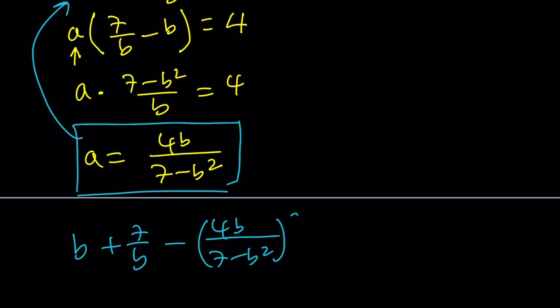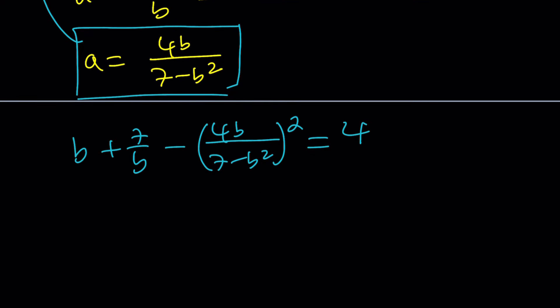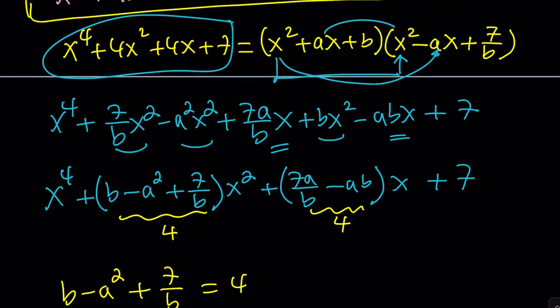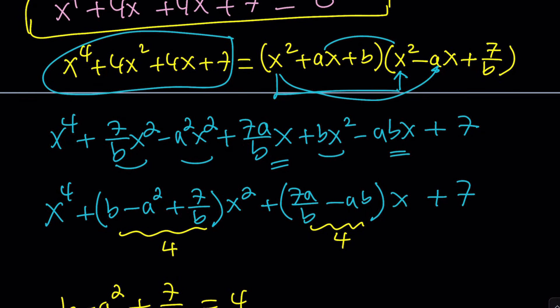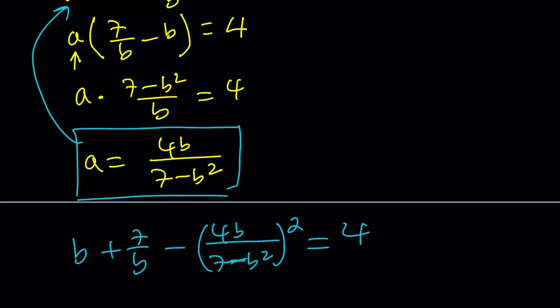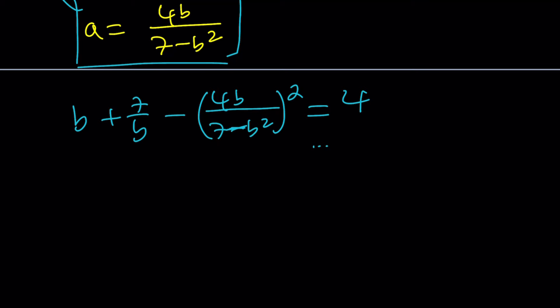It looks like we're going to get a quartic from here, and with only a single variable — but the problem is this is going to give us b to the fourth, so it's going to be a quartic again. We're not necessarily looking for integer values, so we can't just guess and check. If a and b were integers, that would be fairly easy, but we don't even know if they're rational. So let's go ahead and leave this incomplete. There is a better way to do it, which is the other method.